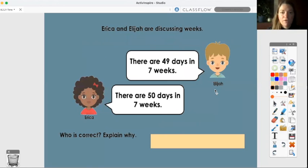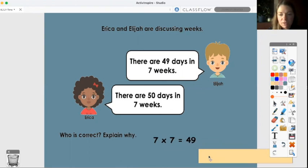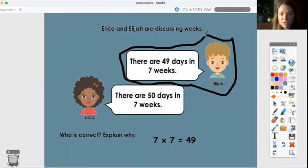Erica and Elijah are discussing weeks. Elijah says there are 49 days in seven weeks and Erica says there are 50 days in seven weeks. Who is correct? And explain why. Have a go at that one. Well, if we are looking at how many days there are in seven weeks, I am going to think of how many days are in one week is seven. So we're looking at seven multiplied by seven. That totals 49. So the child who was correct is Elijah. And Elijah is correct. We can just explain that because seven times seven is 49. There are seven days in a week, seven lots of seven, 49.